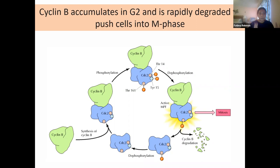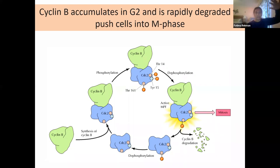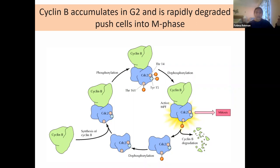Phosphatases can remove those phosphates to push the cell into the next phase. Additionally, there are inhibitors of CDKs — additional proteins that can bind directly to CDK-cyclin complexes and inhibit their activity. Some of these blocks are reversible, some irreversible; until the block is removed, the cell cannot move to the next phase. There are multiple parts of cell cycle controlled by these cyclins and activators.